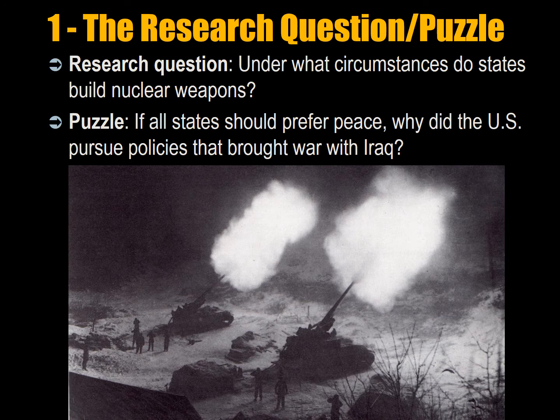The first part of the paper is the research question — or better, the puzzle or the problem. A research question like 'why do wars happen?' is interesting and valid, but it's not particularly directional. What's better is a puzzle. For example: if all states should prefer peace, why did the US pursue policies that brought about war with Iraq in 2003? We have a general assumption that war is undesirable, and then we have the event which contradicts it. We want to solve this contradiction. Reshaping a research question into a puzzle makes your paper much more clear in its purpose.